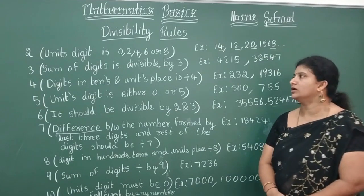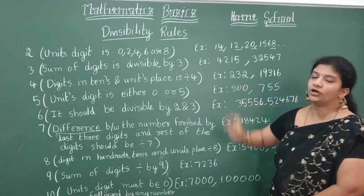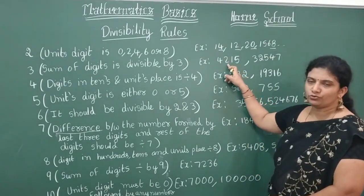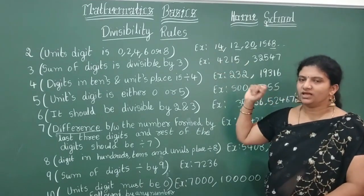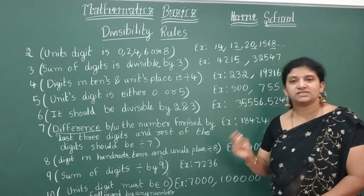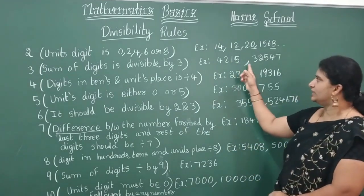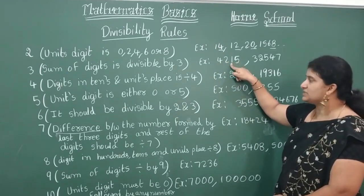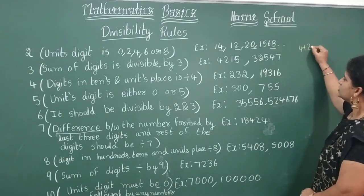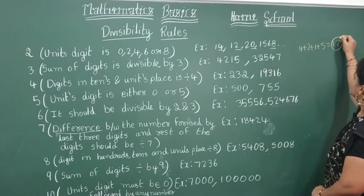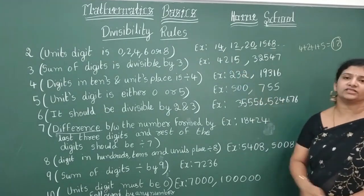Now, divisibility by 3: how can we identify whether a given number is divisible by 3 or not? The rule is: the sum of digits must be divisible by 3. For example, take the 4-digit number 4215. Add all the digits: 4 + 2 + 1 + 5 = 12. Is 12 divisible by 3? Yes — 3 × 4 = 12. Therefore, 4215 is divisible by 3.